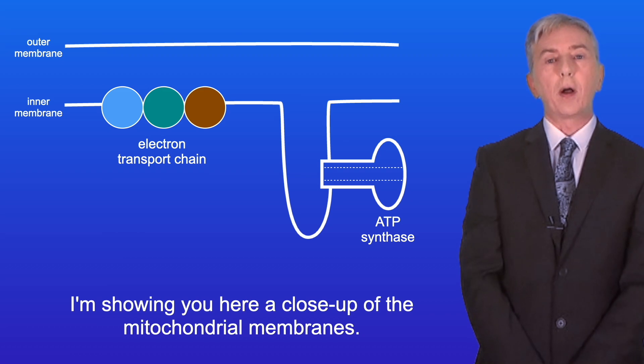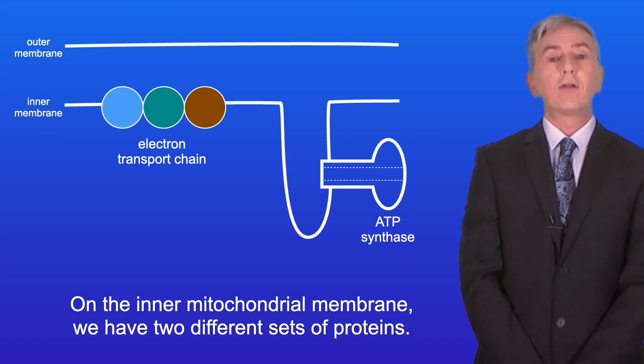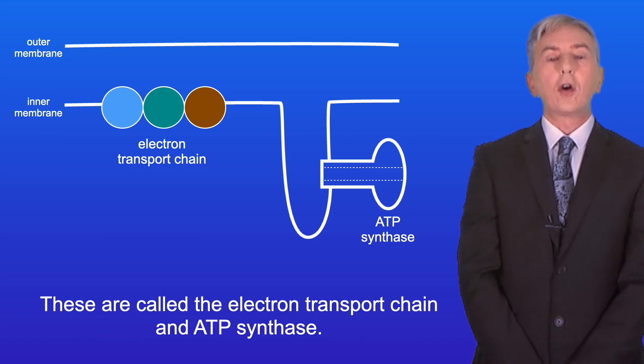I'm showing you here a close-up of the mitochondrial membranes. On the inner mitochondrial membrane, we have two different sets of proteins. These are called the electron transport chain, and ATP synthase.